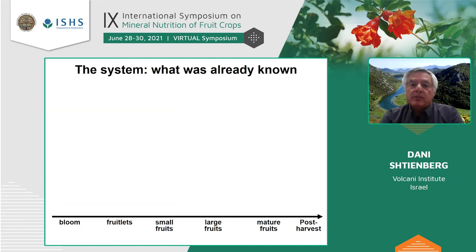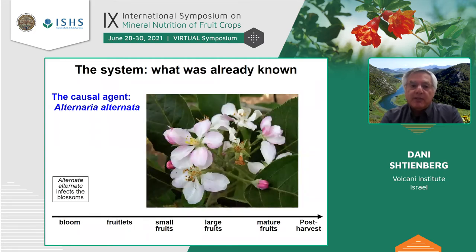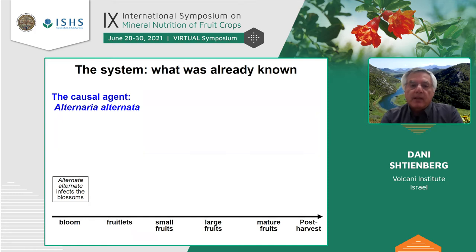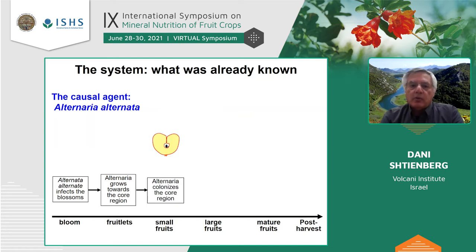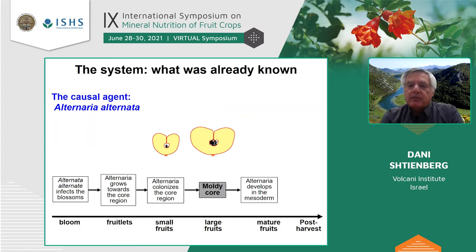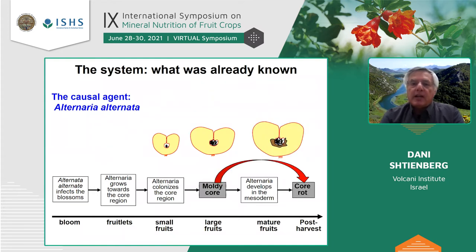Quite a lot is known about this pathosystem. The causal agent is a fungus called Alternaria alternata. Alternaria penetrates and infects the blossom during blooming, then grows towards the core region as the fruitlets develop, colonizes the small fruits, and causes moldy core. As time passes, the fruits mature and Alternaria may develop in the mesoderm causing core rot. Nevertheless, there is large variation between years, between orchards, and even between individual trees in the same orchard in the incidence of core rot.